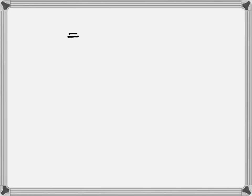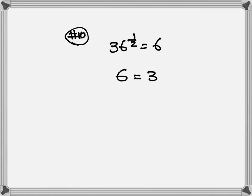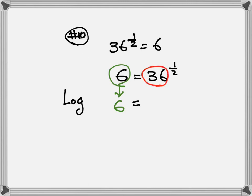Now let's look at number 10. We have 36 to the 1/2 is equal to 6. So step 1, switch both sides: 6 equals 36 to the 1/2. Step 2, you're going to write down the log. Write down the equal sign. The 6 is your x position, so 6 goes straight down. The 36 is your base, so 36 goes back over here to become little 36. Then after that, you drop the 1/2 down to become big 1/2. That's how you change from exponential back to log.